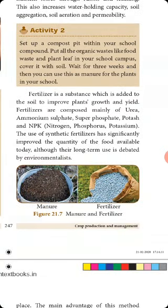A fertilizer is a substance which is added to the soil to improve plant growth and yield. Fertilizers and manure can increase soil fertility and also increase the yield of plant production. Fertilizers are composed mainly of urea, ammonium sulfate, superphosphate, potash, and NPK.